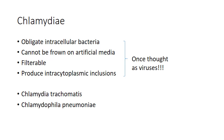Chlamydia have certain characteristics: they are all obligate intracellular bacteria. They cannot be grown in artificial media and require certain cell lines for their growth. Chlamydia are quite small enough to pass through bacterial filters, which is why they are filterable. They also produce intracytoplasmic inclusions. Because of these characteristics, they were once thought to be viruses, but Chlamydia are now confirmed to be bacteria because they do have some properties similar to that of bacteria.